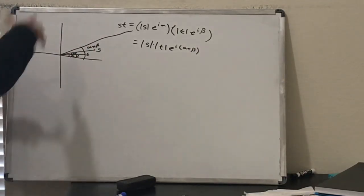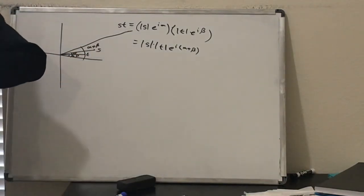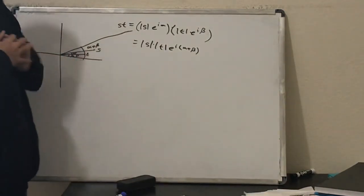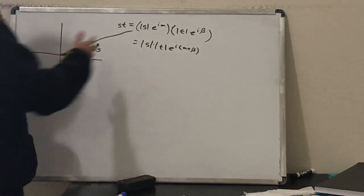So if you plug in i for t, you do get the multiplication by 90 degrees. This is just a more general case.